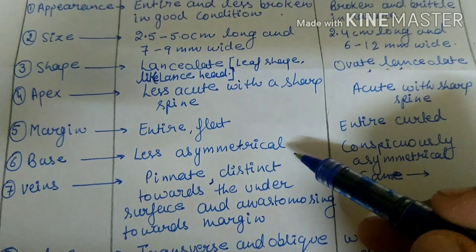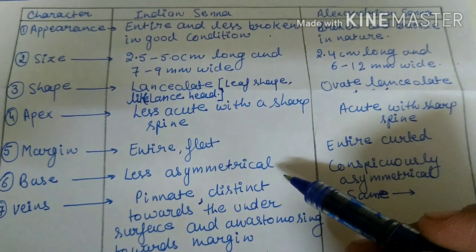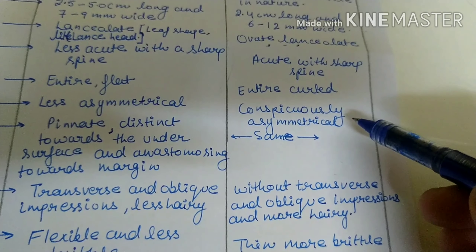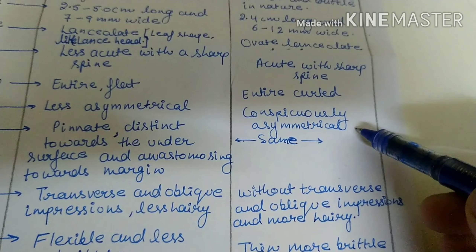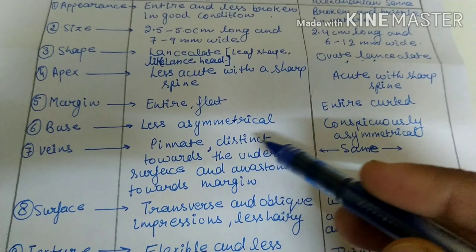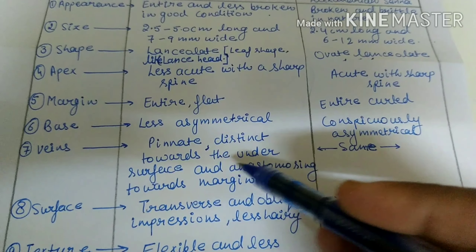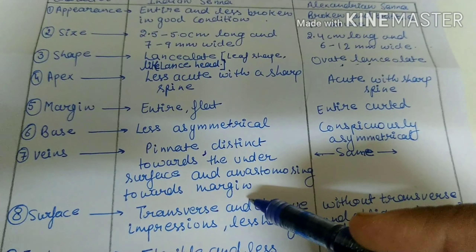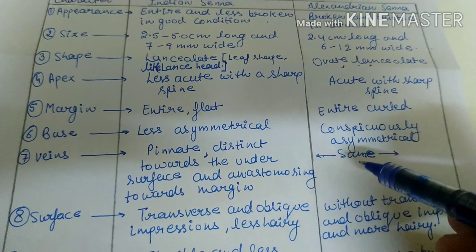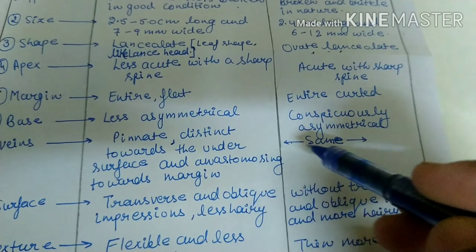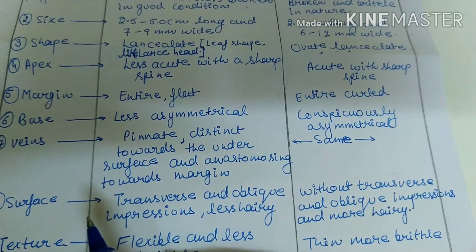Regarding base structure, the base of Indian Senna is less asymmetrical, while the base of Alexandrian Senna is conspicuously asymmetrical. The veins of Indian Senna are pinnate, distinct towards the undersurface and anastomosing towards the margin. Alexandrian Senna shows the same morphological character for veins.